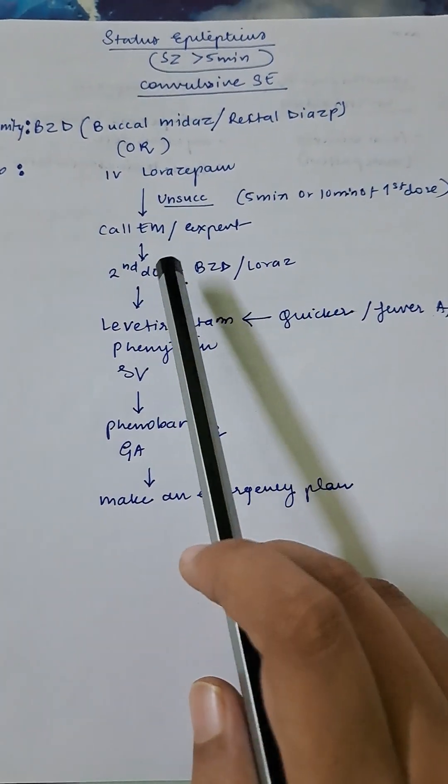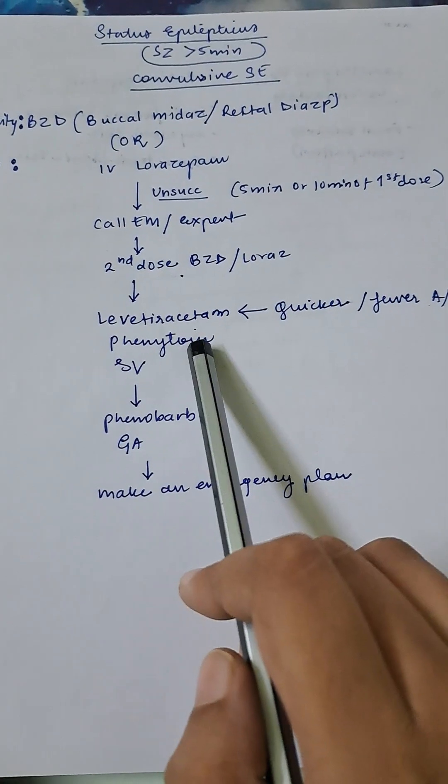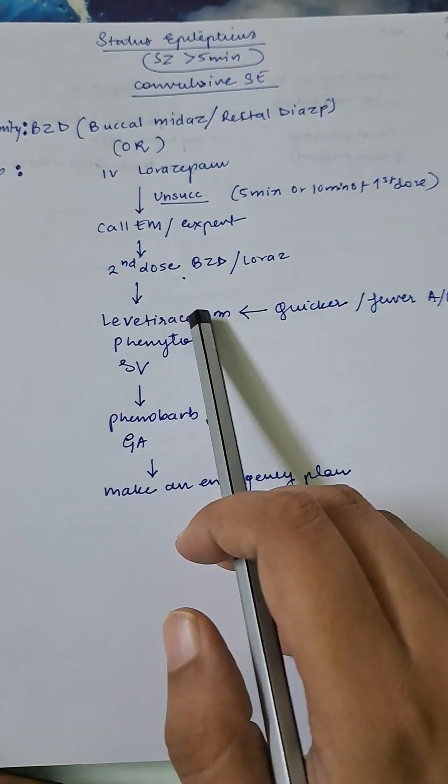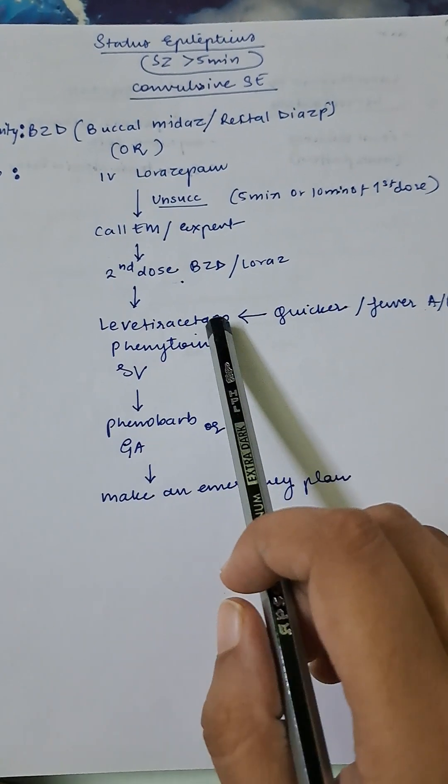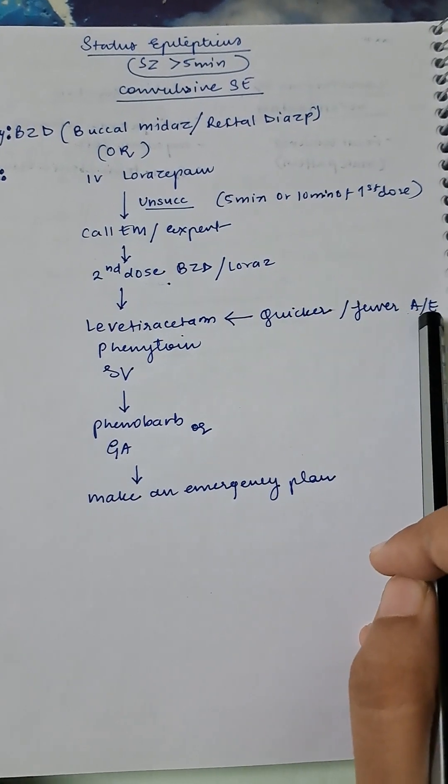Despite giving two doses, if the convulsions recur after ten minutes, then you will give levetiracetam, phenytoin, or sodium valproate, whichever is available. You have to consider the fact that levetiracetam has quicker and fewer adverse effects.